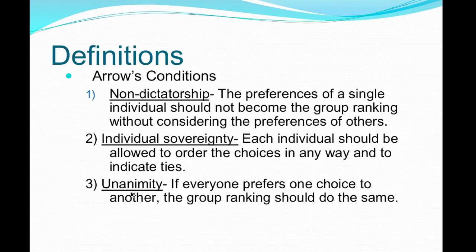For Arrow's Conditions, there are five of them. Number one is non-dictatorship. To be a fair voting system — and that's what Arrow's Conditions are doing, they're trying to set up a way to make sure that a voting process is fair — non-dictatorship means that one person's vote doesn't mean that it holds true for everybody else regardless.